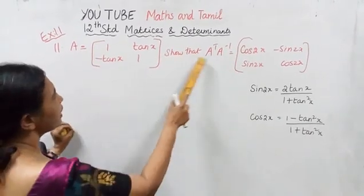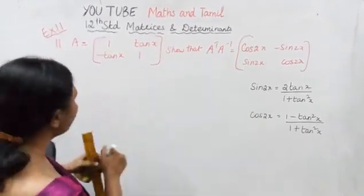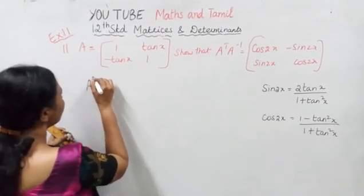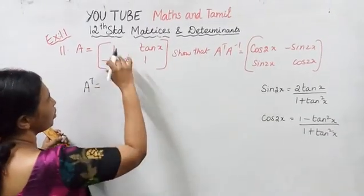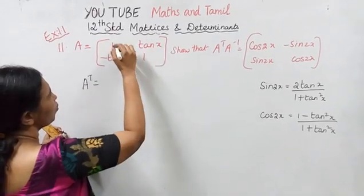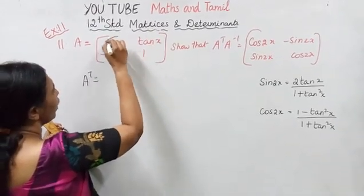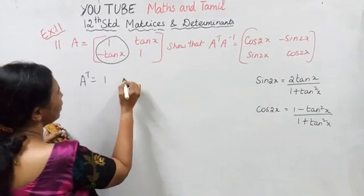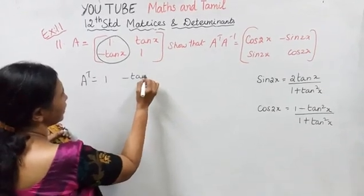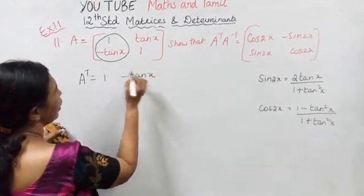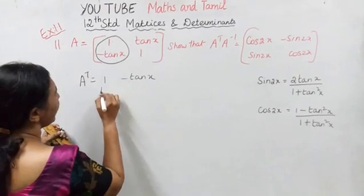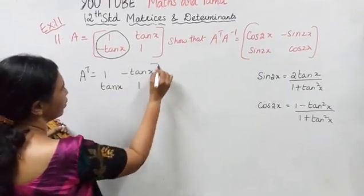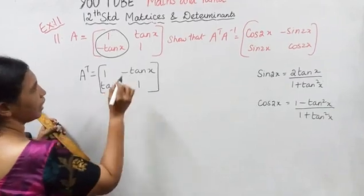First, find A transpose. A transpose: if we interchange rows and columns, the result will be 1, minus tan x; tan x, 1. This is A transpose.